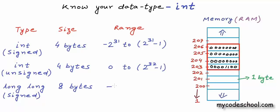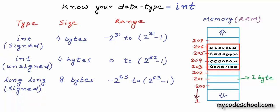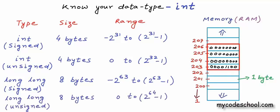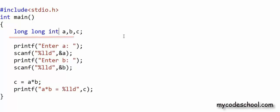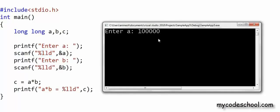If 4 bytes is not enough, we can use long long int, or just long long, which gives 8 bytes — twice the memory of int. Long long can also be signed or unsigned. With signed long long, the range is minus 2 to the power 63 to 2 to the power 63 minus 1. The range of unsigned long long is 0 to 2 to the power 64 minus 1. The result of multiplying 100,000 by 200,000, which is 2 times 10 to the power 10, easily fits in a signed long long. Declaring A, B, and C as long long and using %lld as the placeholder in scanf and printf gives the correct output of 2 times 10 to the power 10.